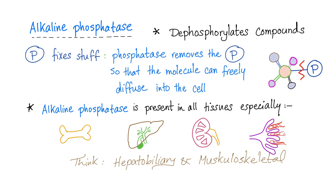Phosphate fixes molecules in place, while phosphatase removes the phosphate so the molecule is now free to diffuse into the cell. With a phosphate group attached, the molecule cannot freely diffuse into the cell. Alkaline phosphatase is present in virtually every single tissue, especially bones, liver — particularly the hepatobiliary system — kidneys, and placenta. Think hepatobiliary and musculoskeletal.